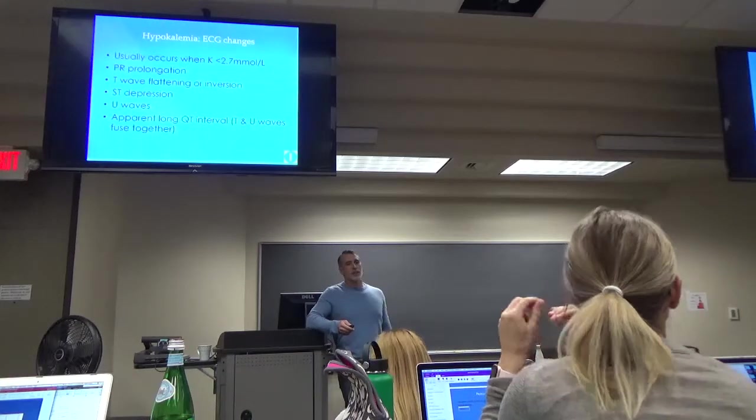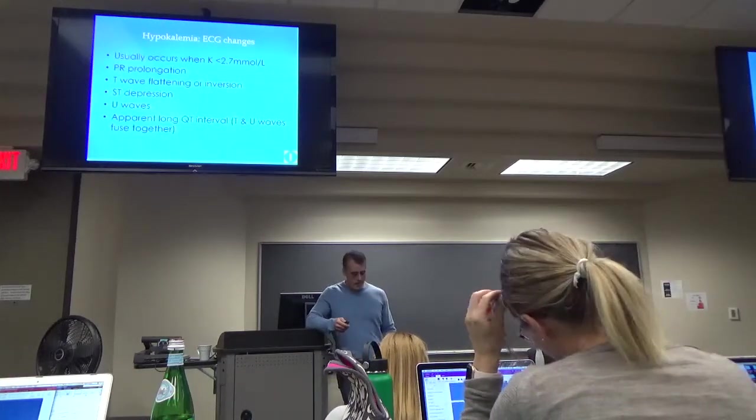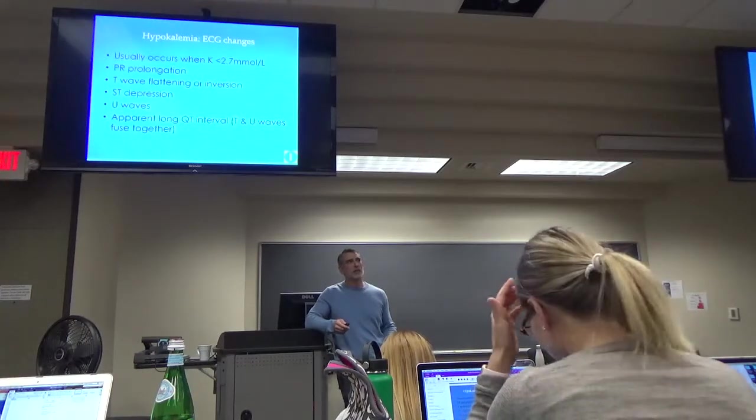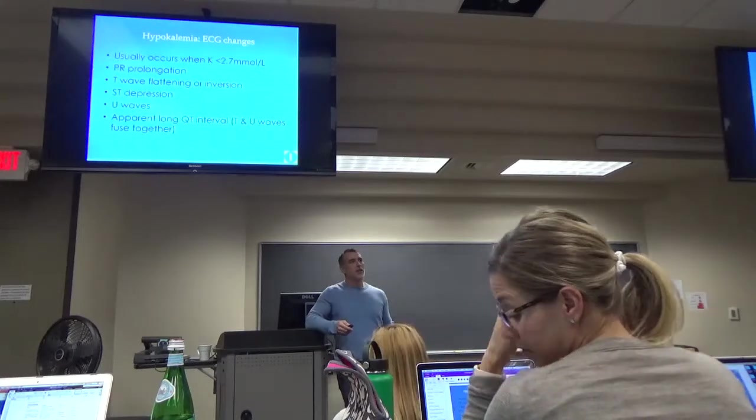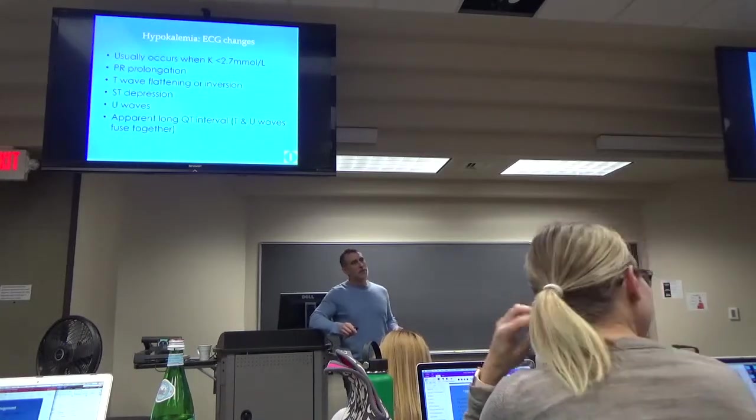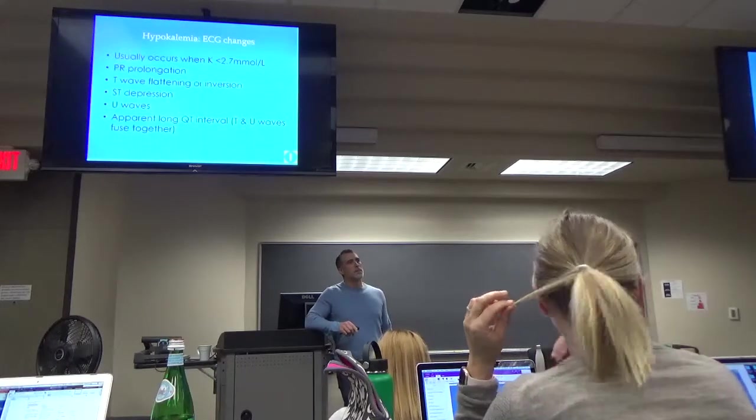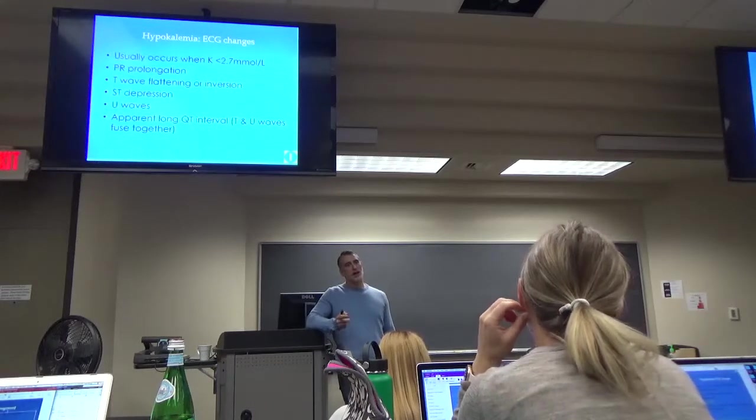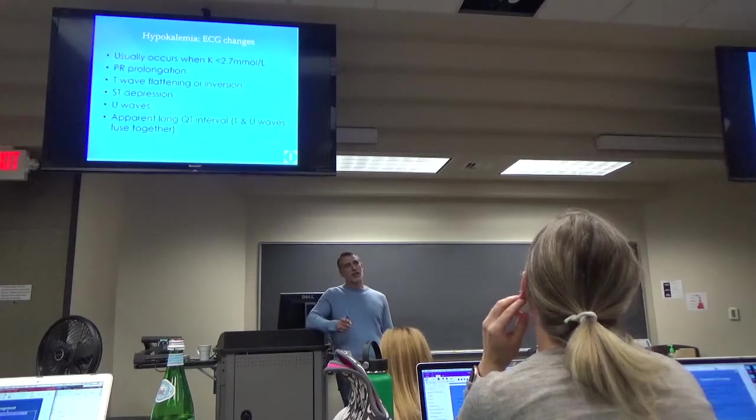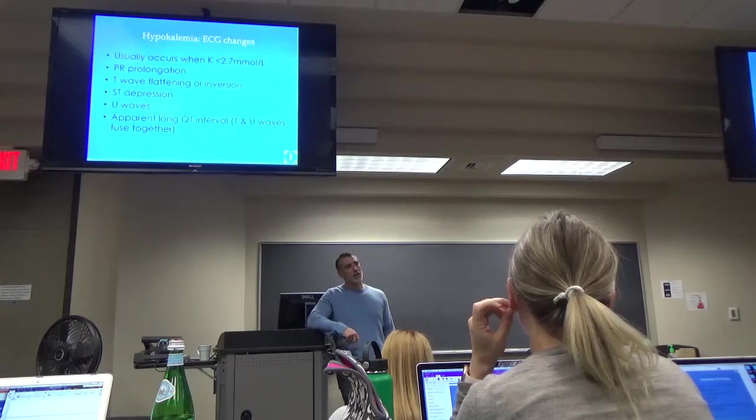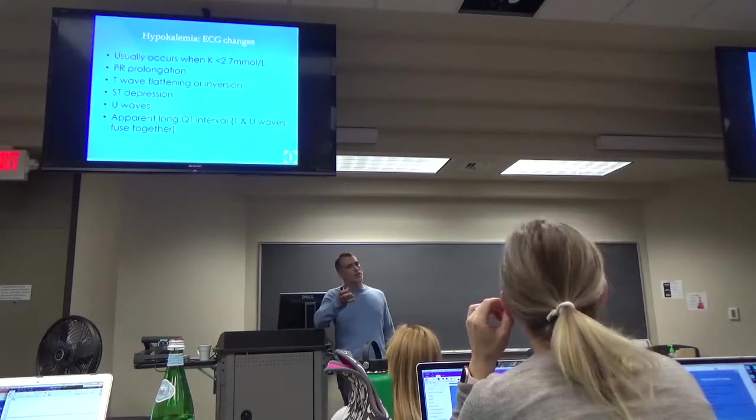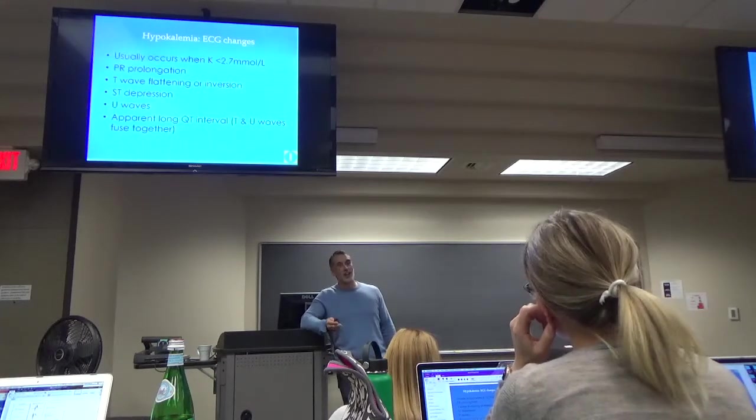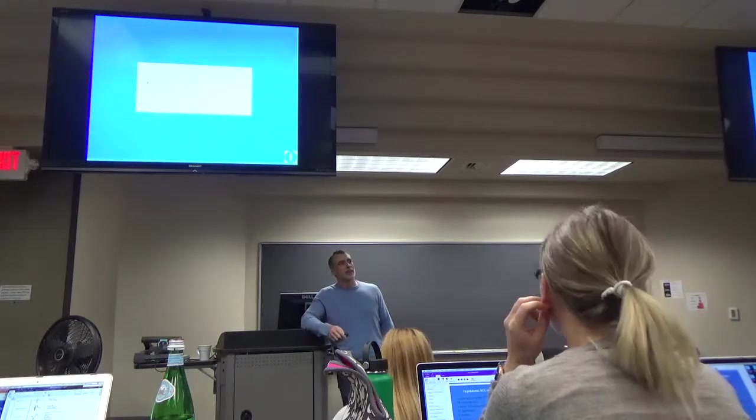So, EKG changes usually start somewhere around 2.7 on your lab value. You start to get PR prolongation, some T-wave flattening inversion, maybe ST-segment depression, and then the U-wave. So, I always remembered that if you were under potassium, you would get a U-wave. I've seen that before, but the one patient that I saw it on was a patient who was on a bicarb drip for a tricyclic antidepressant overdose, and they had gotten his serum, his pH up high enough that finally drove the potassium down, and he had an actual U-wave. Just gave him some potassium to go away.